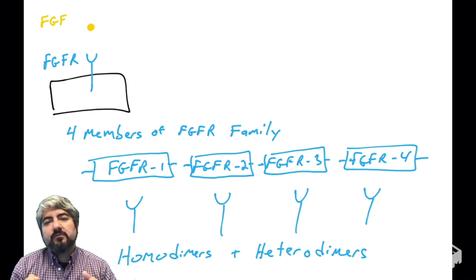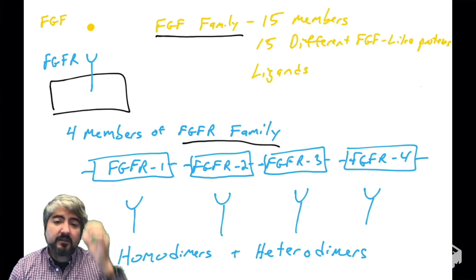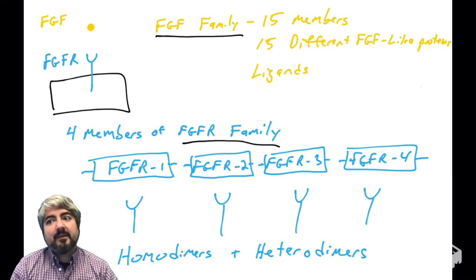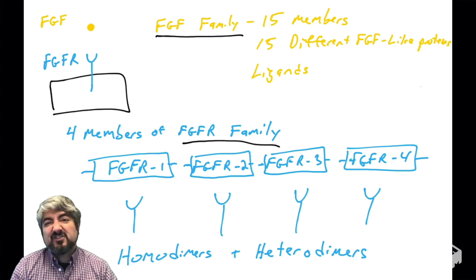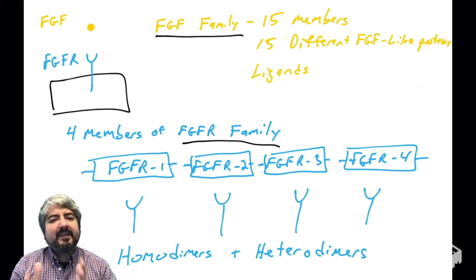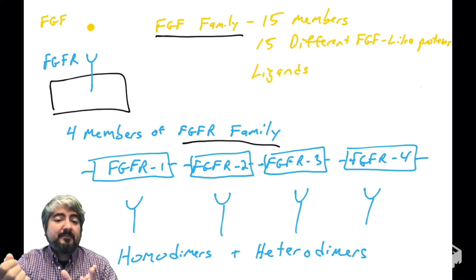The point is not to memorize all the receptor versions and their dimer combinations, but just to understand that when you're reading about growth factor receptors, you'll encounter different versions — one, two, three, or four — and they might be forming homodimers or heterodimers. In general they all function more or less the same: they bind growth factor, form dimers, and transphosphorylate. The same applies to the growth factor — FGF turns out to have 15 different family members. There are 15 different proteins that look and act like FGF, binding these receptors and causing dimerization and transphosphorylation. The point is to understand that different molecules can bind the receptor and work as ligands.